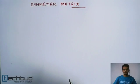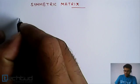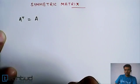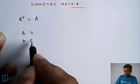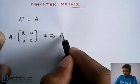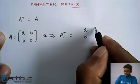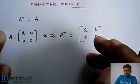The first one is Symmetric Matrix. A symmetric matrix is a matrix for which the transpose of the matrix is equal to the original matrix. For example, if we take a 2x2 matrix like [[A, B], [B, C]], and we find A transpose, it will be [[A, B], [B, C]]. So here the transpose is equal to the original matrix. That's why we say it is a symmetric matrix.